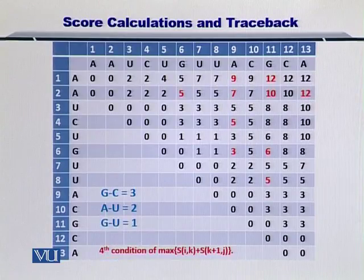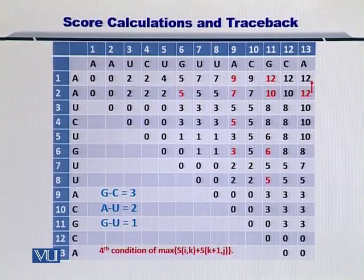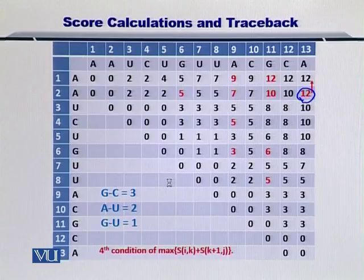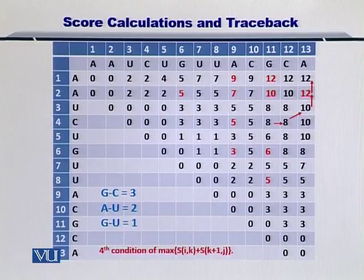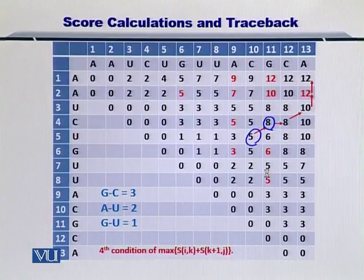Starting from the last position, that is 12. We know during our calculations that this 12 was actually taken from the bottom element. Next, this 12 came from the bottom element as well, as shown by the second arrow. And this 10 actually came from the 8 that resulted in the score of 10. This 8 came from the same row, and this 8 came from the diagonal as well.